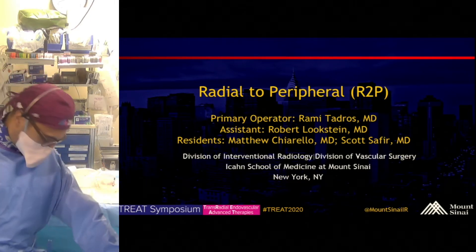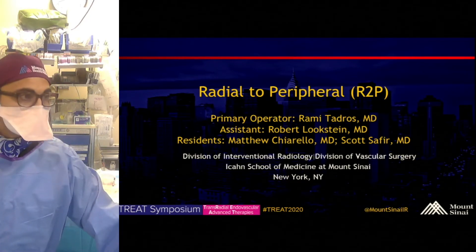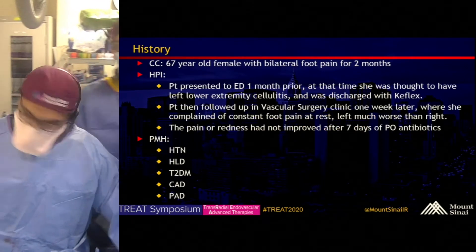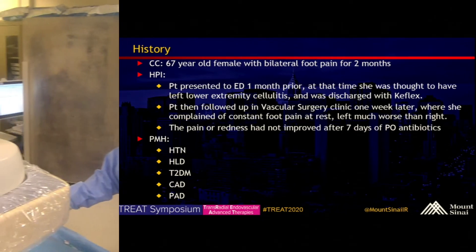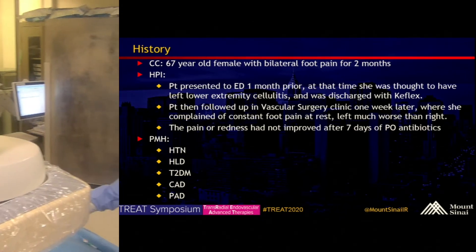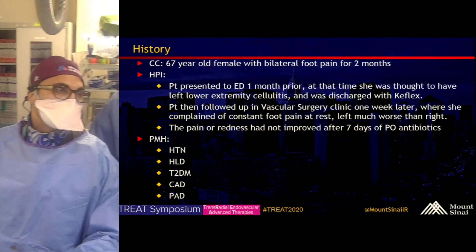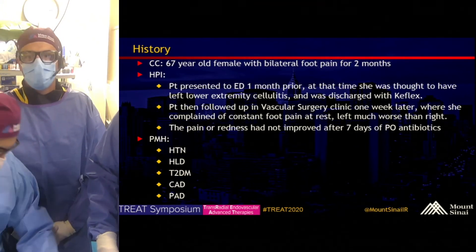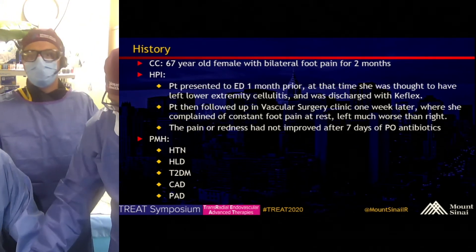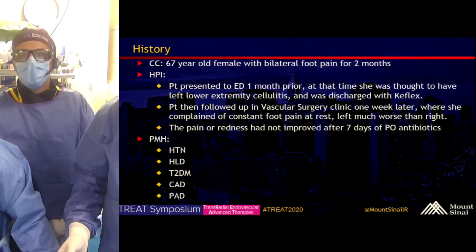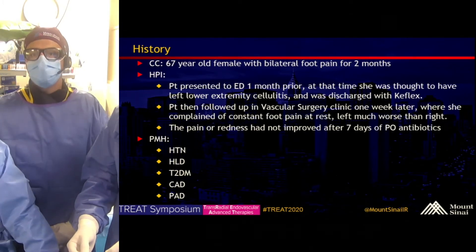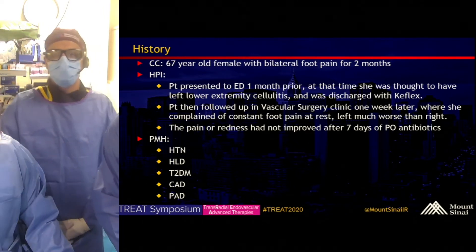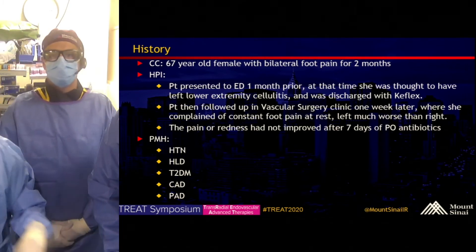So I hope everyone's doing okay this morning. This is going to be a radial-to-peripheral case. This is a 67-year-old female with a history of bilateral foot pain for the past two months. One month ago she presented to the ED, where she was thought to have lower extremity cellulitis and was discharged with Keflex. She then followed up in our vascular surgery clinic one week later, where she complained of constant foot pain at rest, left worse than right. The pain and redness had not improved in the past seven days on antibiotics. She has a past medical history of hypertension, hyperlipidemia, diabetes, CAD, and peripheral arterial disease.